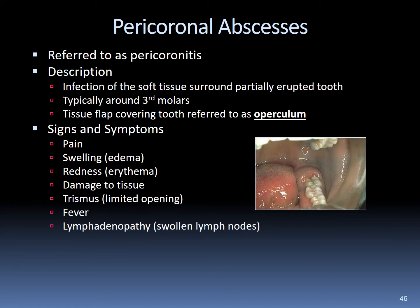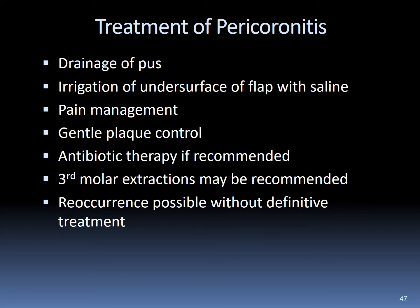Pericoronal abscesses are referred to as pericoronitis — an infection of the soft tissue surrounding any partially erupted third molar. The tissue flap covering the third molar is called the operculum. Symptoms include pain, swelling, redness, tissue drainage, trismus, fever, and lymphadenopathy. Pericoronitis treatment includes drainage of pus through irrigation of the undersurface flap with saline, pain management, gentle plaque control, antibiotic therapy, and possibly third molar extraction. Reoccurrence is possible without definitive treatment.